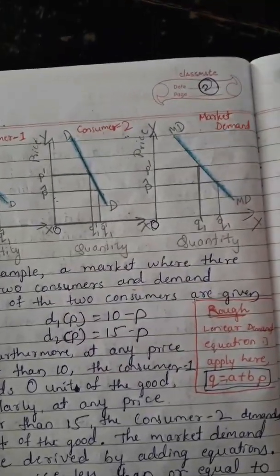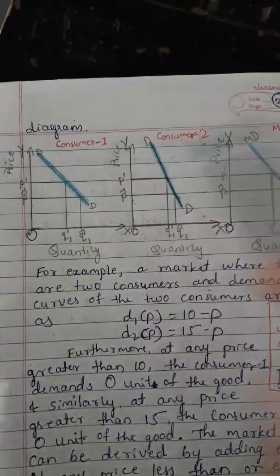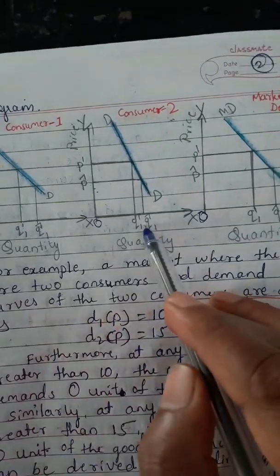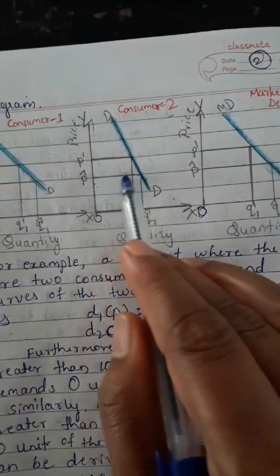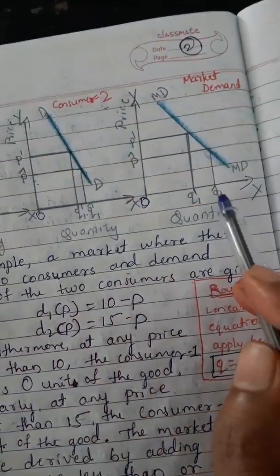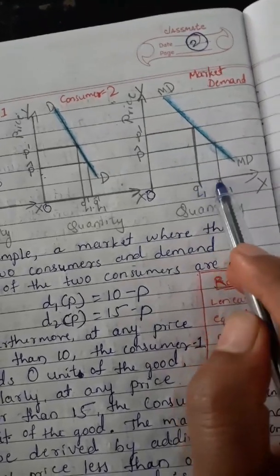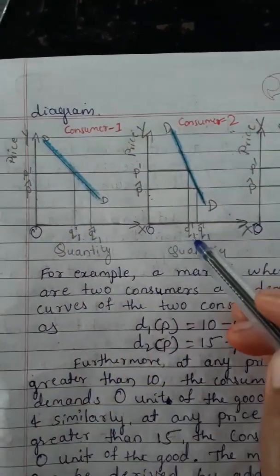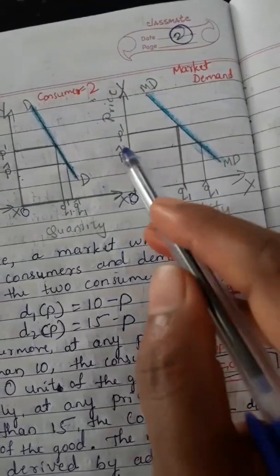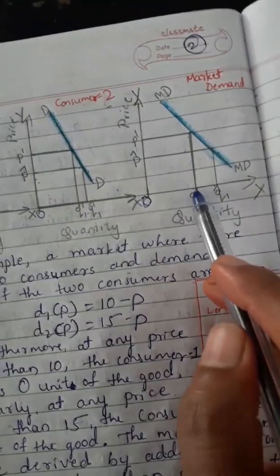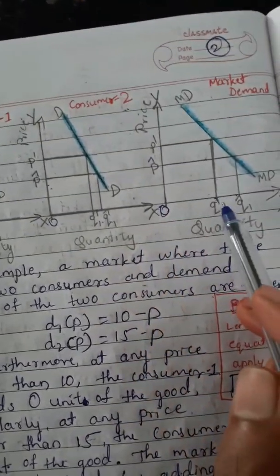How do we get the market demand? For example, when the price is P-cap (10 rupees), we add Q1-cap of consumer one plus Q1-cap of consumer two to get the market quantity Q1-cap. When the price increases to P1, both consumers buy less — Q1 from each — and the market quantity of demand also decreases. When price increases, market demand quantity decreases.